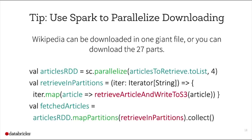To download in parallel, I used sc.parallelize to create an RDD from the list of article URLs, then a .map command to download each part. However, Wikipedia blocks connections if you download more than three files from one IP at a time. I used a trick to control the number of partitions to match the number of machines, and used mapPartitions to download articles one by one, with logic to pause if Wikipedia rate-limited me.